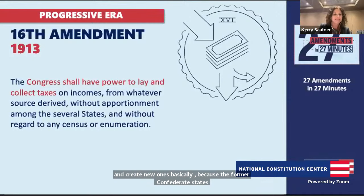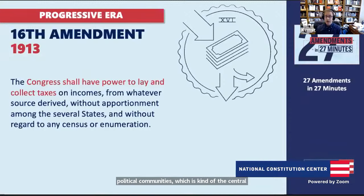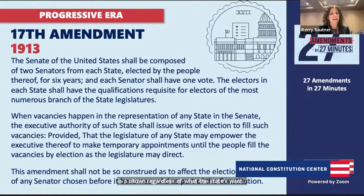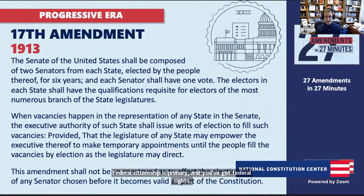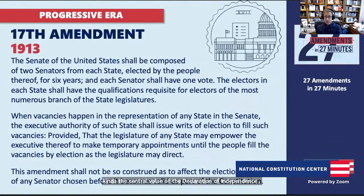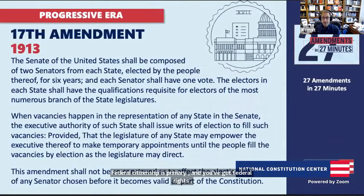Moving into the progressive era: the 16th Amendment gives the federal government clearly the power to impose an income tax — the federal government now has a lot more income and can do a lot more. The 17th Amendment establishes direct election of senators. Under the original Constitution, state legislatures picked them, so they cared about state authority. Now that the people select them, we're shifting to a more nationalist model where the federal government is likely to be more active.